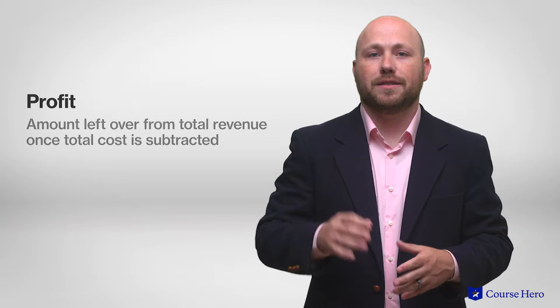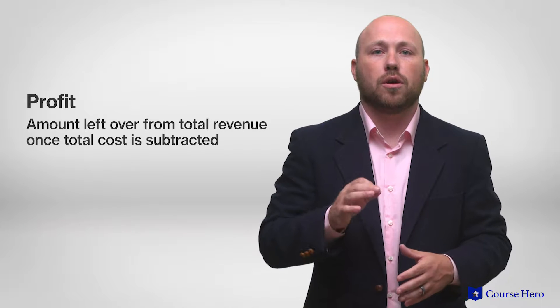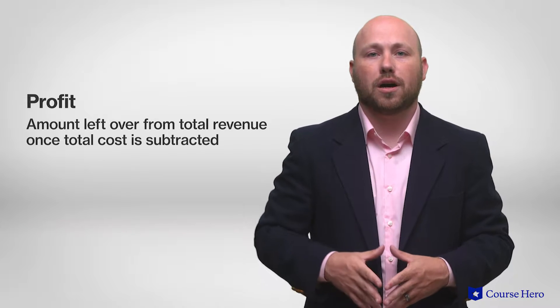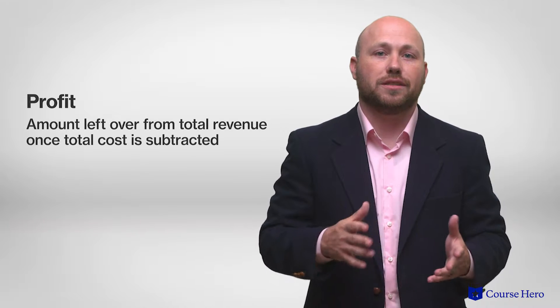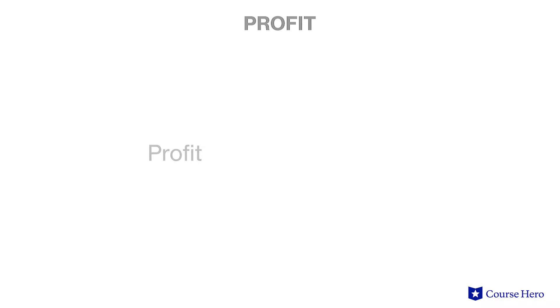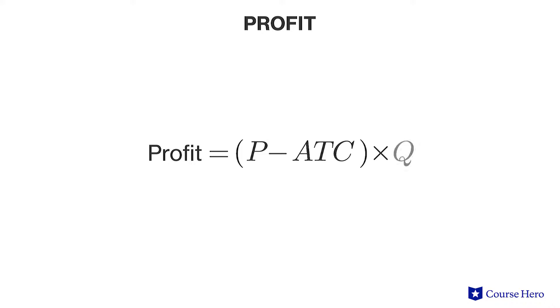Simply put, profit is the amount left over from total revenue once the total cost of production is subtracted. If you want to think about it on a per unit basis, profit can be calculated as the per unit profit — price minus average total cost — multiplied by the number of units sold.